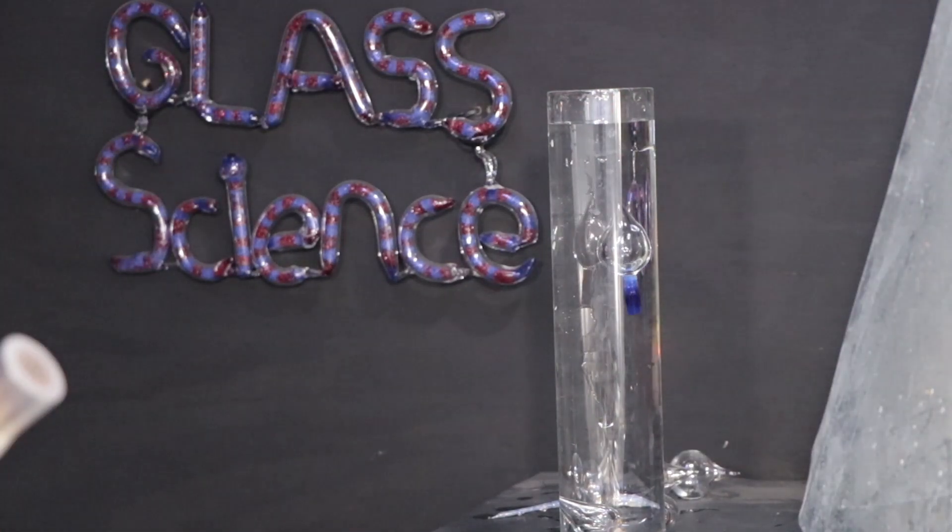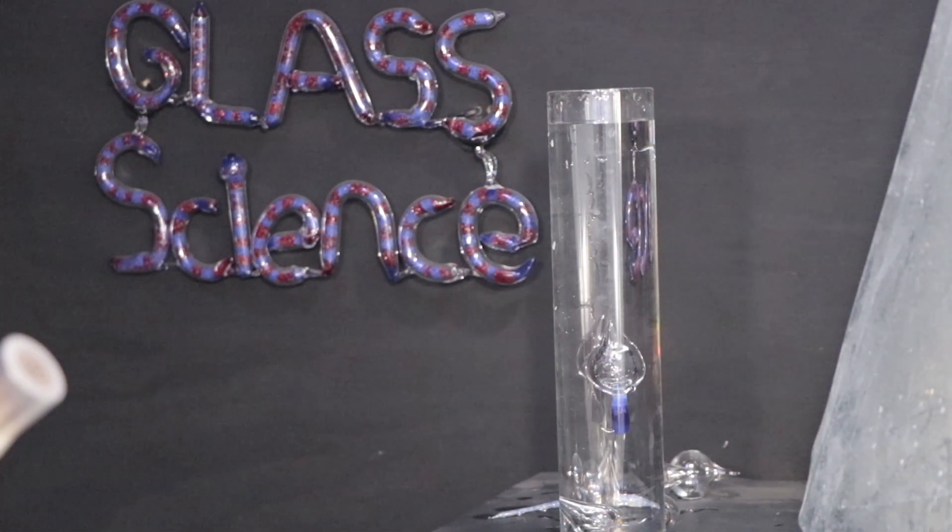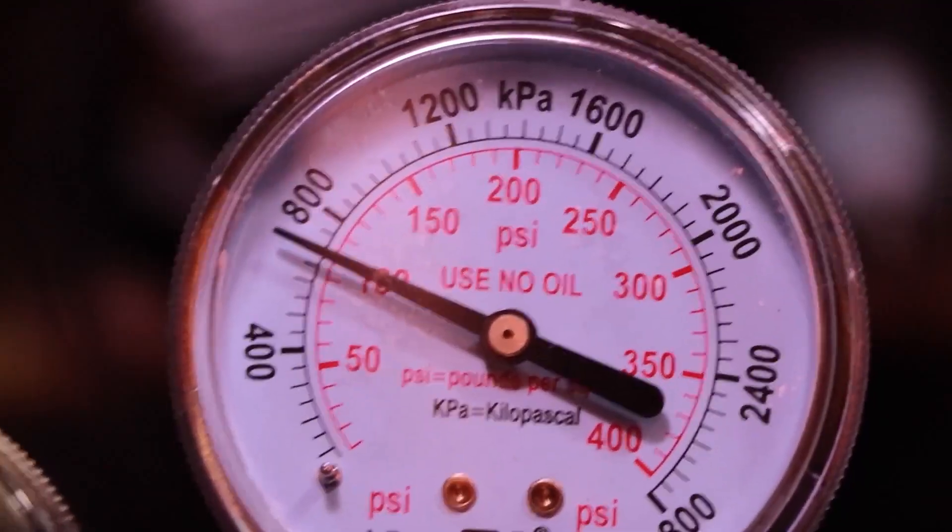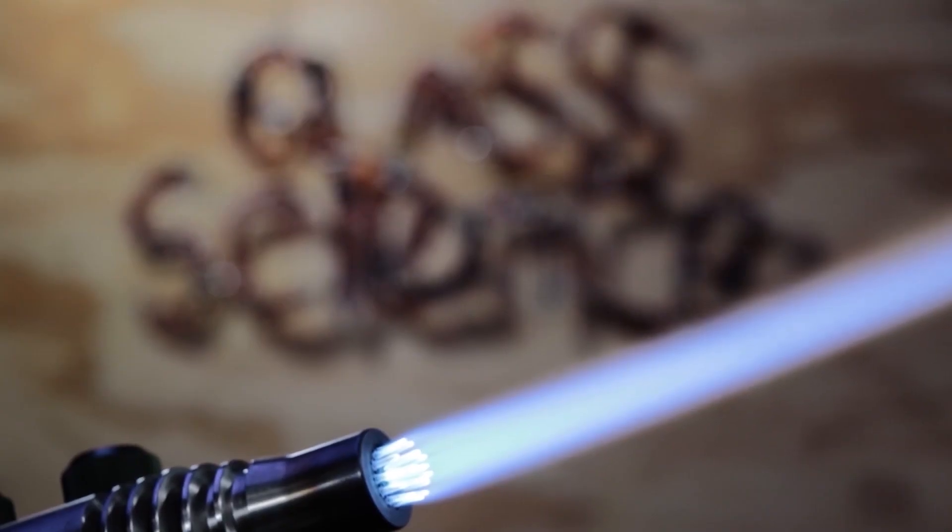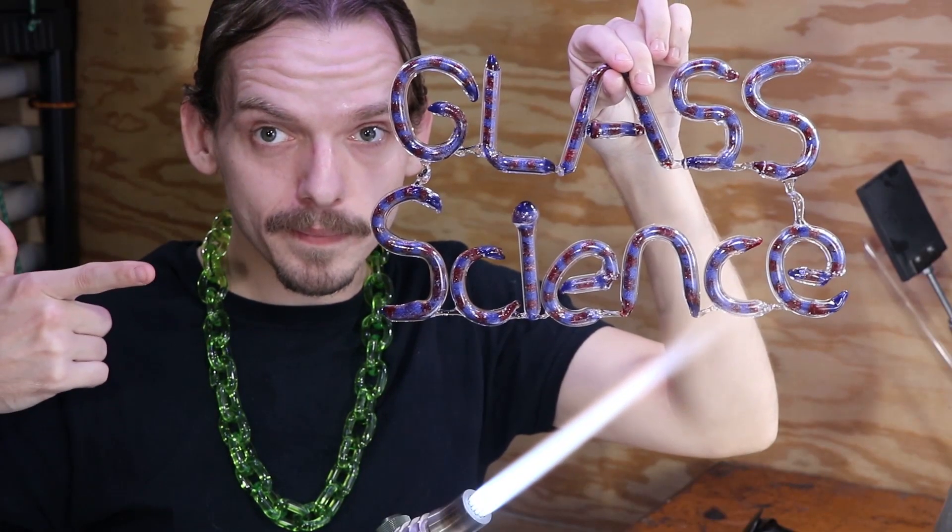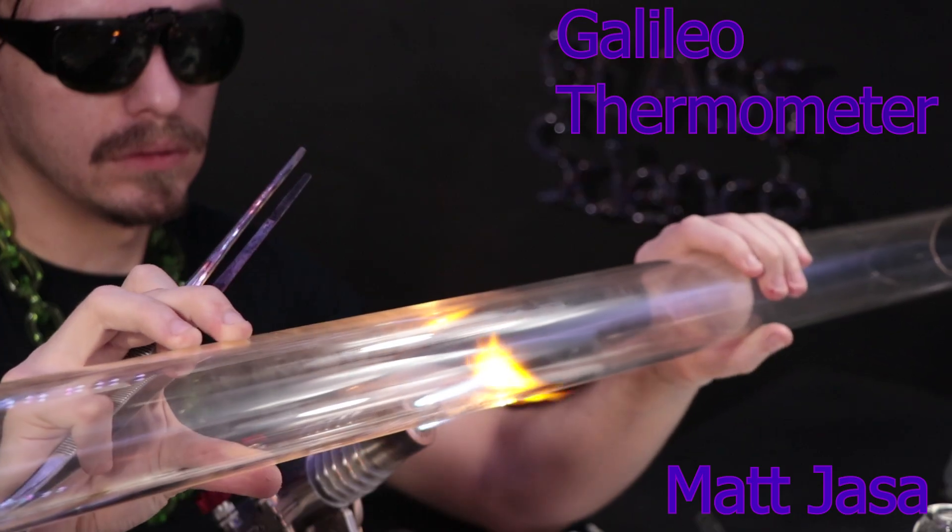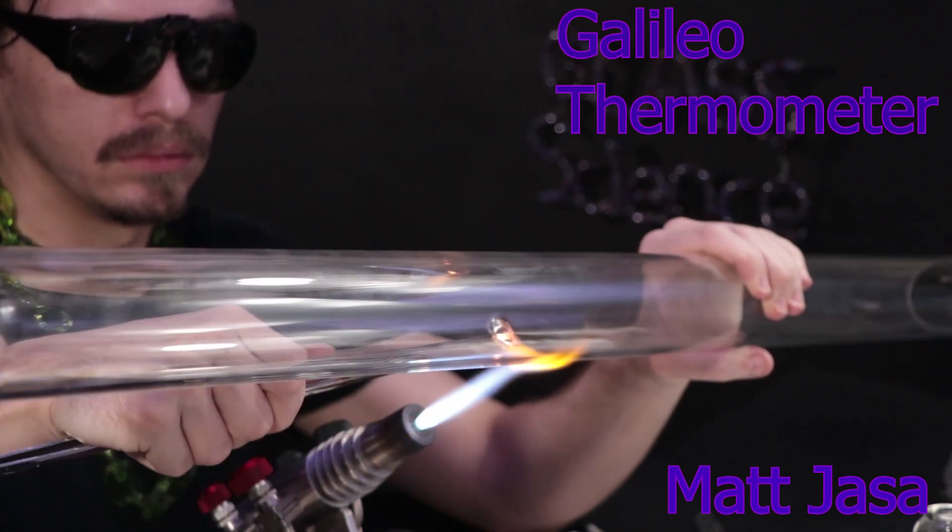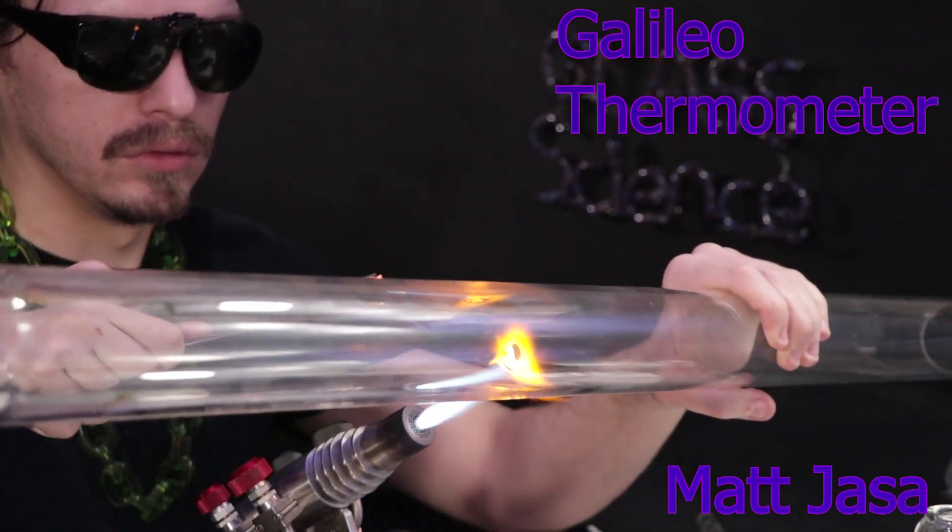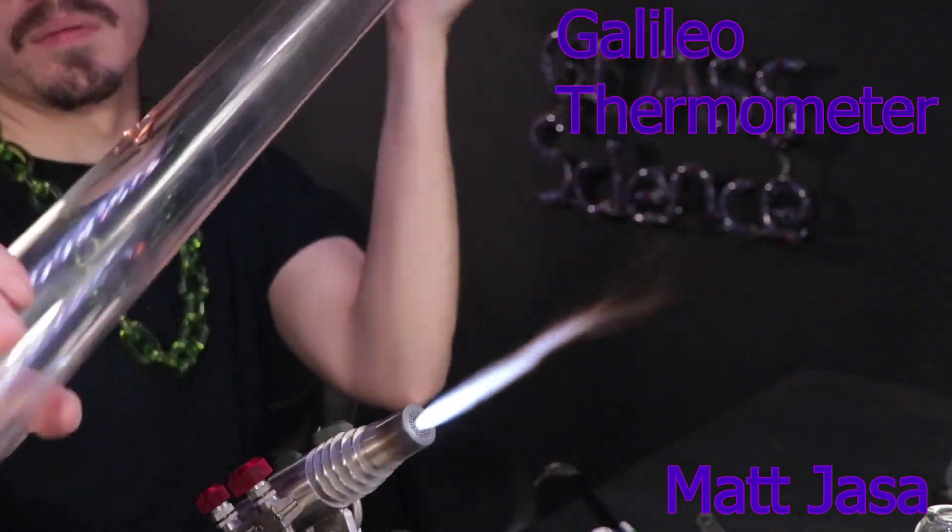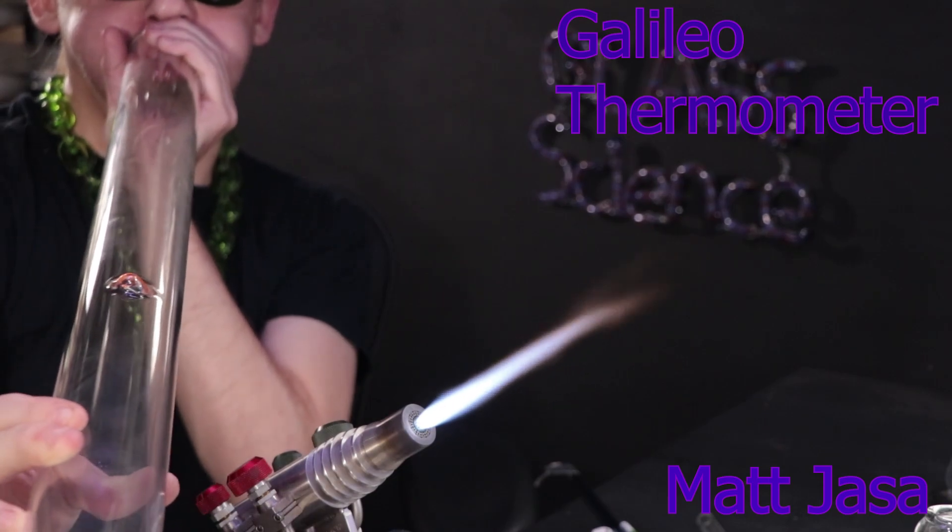Matt Yassa here. Today we'll be looking at the Galileo thermometer. I'll start off by pulling out a little bit of glass with my tweezers. This will help me thin out the wall there to pop a little hole so that I can cut the tube in half.